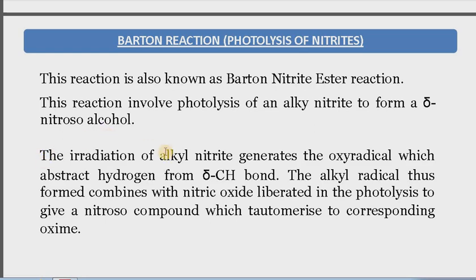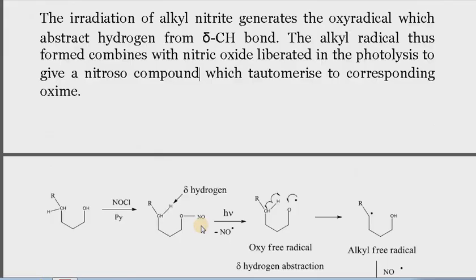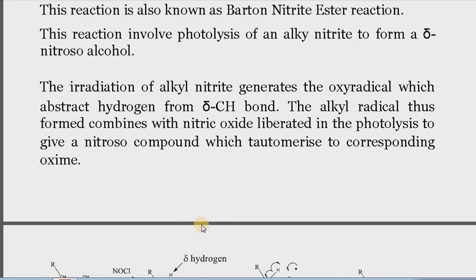This reaction involves photolysis of an alkyl nitrite to form a delta-nitroso alcohol. The irradiation of the alkyl nitrite generates an oxy radical, which abstracts hydrogen from the delta C–H bond. The alkyl radical thus formed combines with the nitric oxide radical liberated in the photolysis to give a nitroso compound.